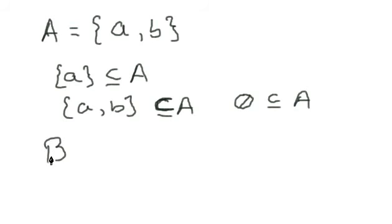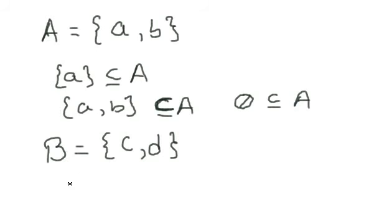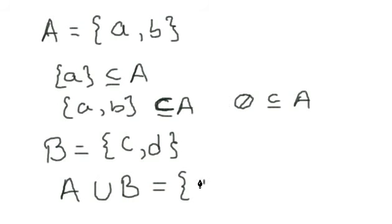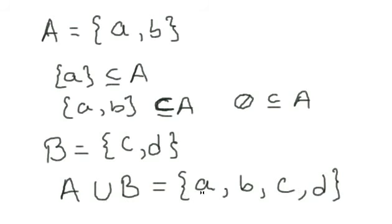Now let's look at operations on sets. Say set A contains elements A and B, and set B contains elements C and D. If we take A union B, we join both sets together and get the new set containing A, B, C, and D. Union simply means you combine everything that's in set A and everything in set B into an entirely new set.